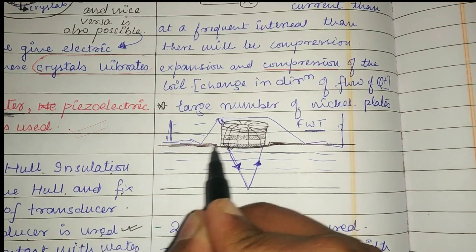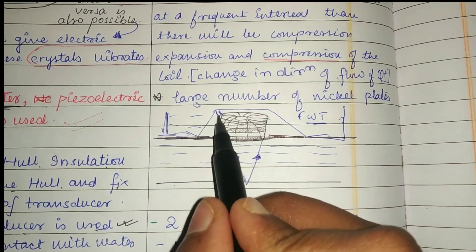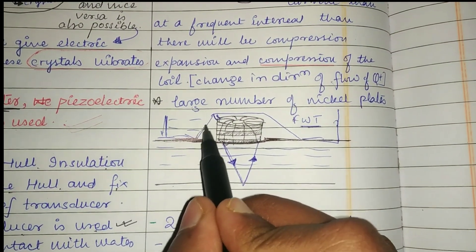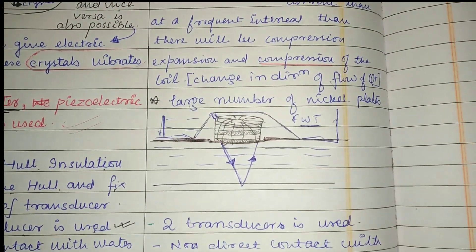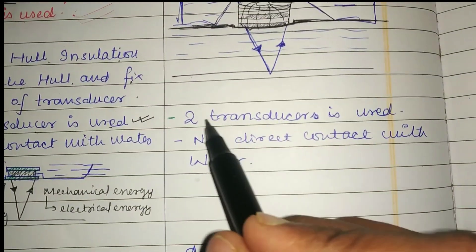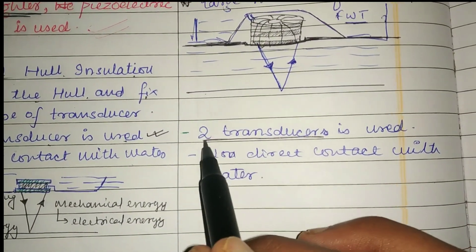The hull is not cut to fix these transducers. These transducers are generally fixed inside a fresh water tank. In the case of magnetostrictive transducers, two transducers are generally used.